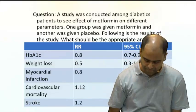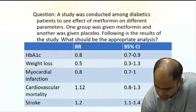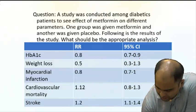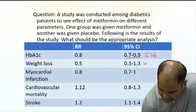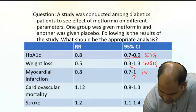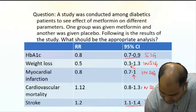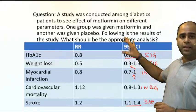Now let us apply these rules to the question. Looking at the table — this one is not touching the null value, so it is significant. This one is touching the null value — insignificant. Here, one has come in between — insignificant. This one also has one directly in it — insignificant. And this one is significant.